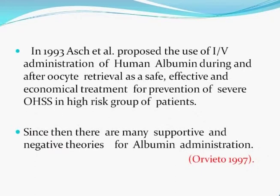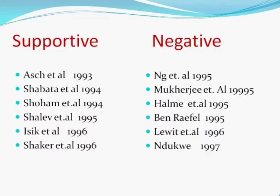In 1993, Esch et al. proposed the use of IV administration of human albumin during and after oocyte retrieval as a safe, effective, and economical treatment for prevention of severe OHSS. Since then, there have been many supportive and negative theories regarding albumin administration, and if you look at the record, these are the supportive and the negative theories.